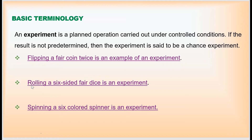The second example is rolling a six-sided fair dice, which is also an experiment. When you roll a dice, you don't know what the result will be. You may get a five, then five again, then two, then five, and so on.